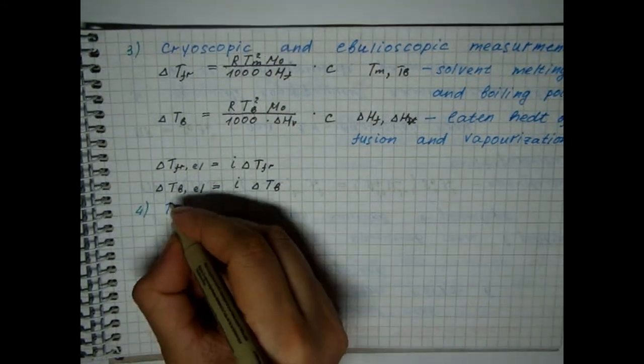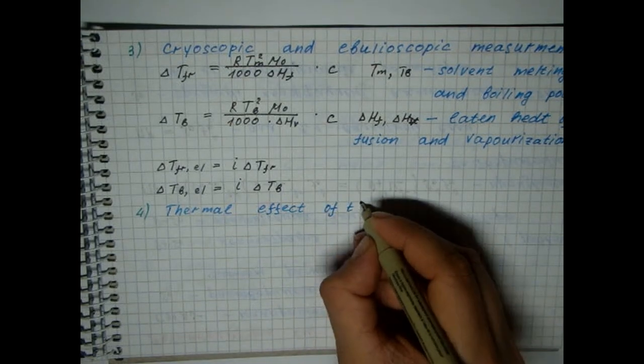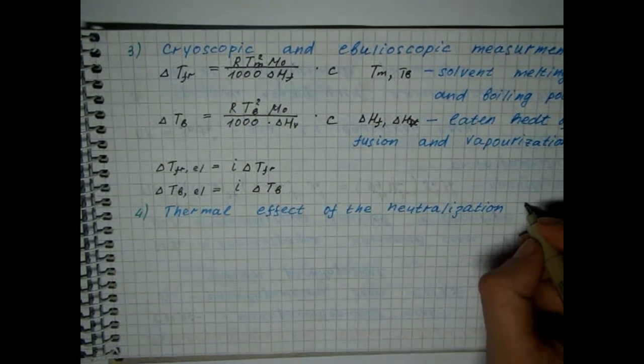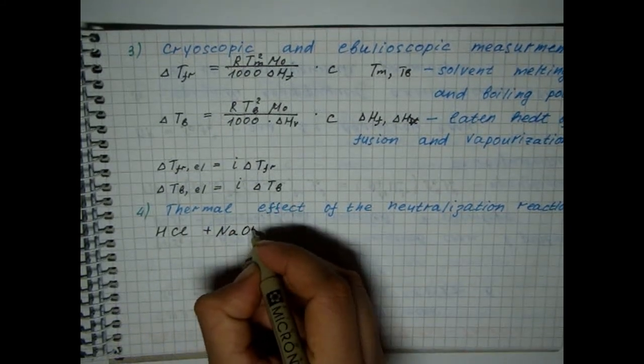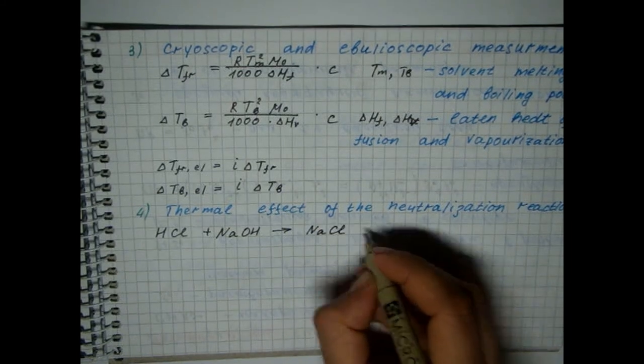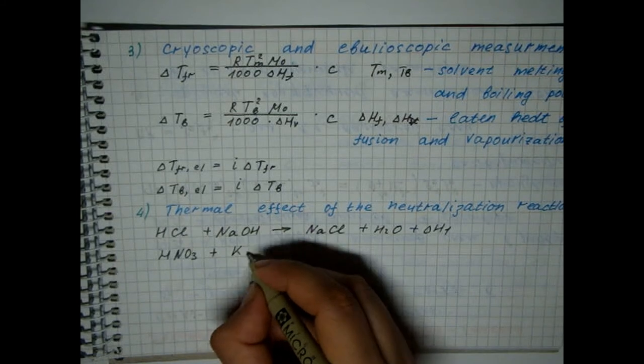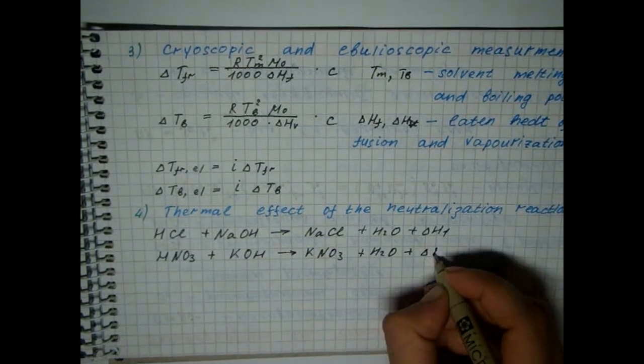Another evidence of dissociation is that the thermal effect of the reaction of neutralizing a strong acid with a strong base in dilute solutions is almost independent of the chemical nature of the acids and bases. For example, for two reactions, changes in enthalpy are the same.